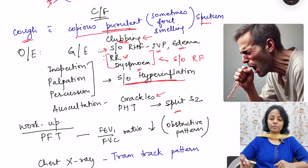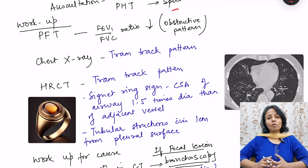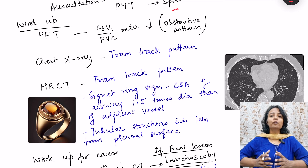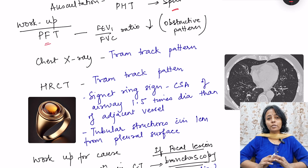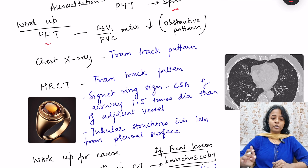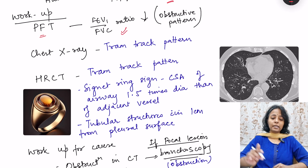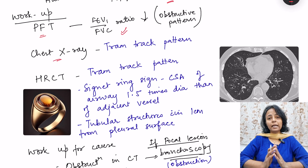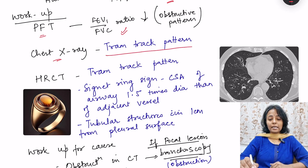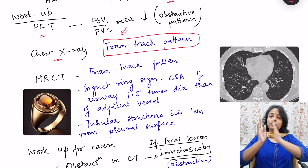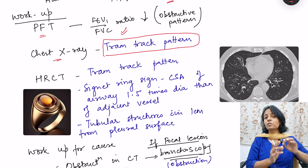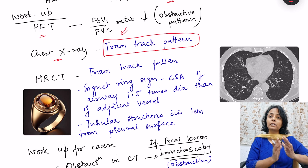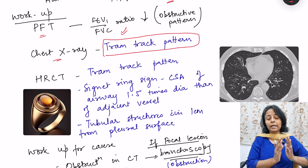What investigations do we perform? In any pulmonary disorder, we assess functional status with a pulmonary function test — spirometry. Since bronchiectasis is an obstructive disorder, we will have a decreased FEV1/FVC ratio — the obstructive pattern. On chest X-ray, we will see dilated airways as a tram-track pattern, with airways extending toward the pleural surface, visible because of dilation. Normally, airways are not visible at the pleural surface.